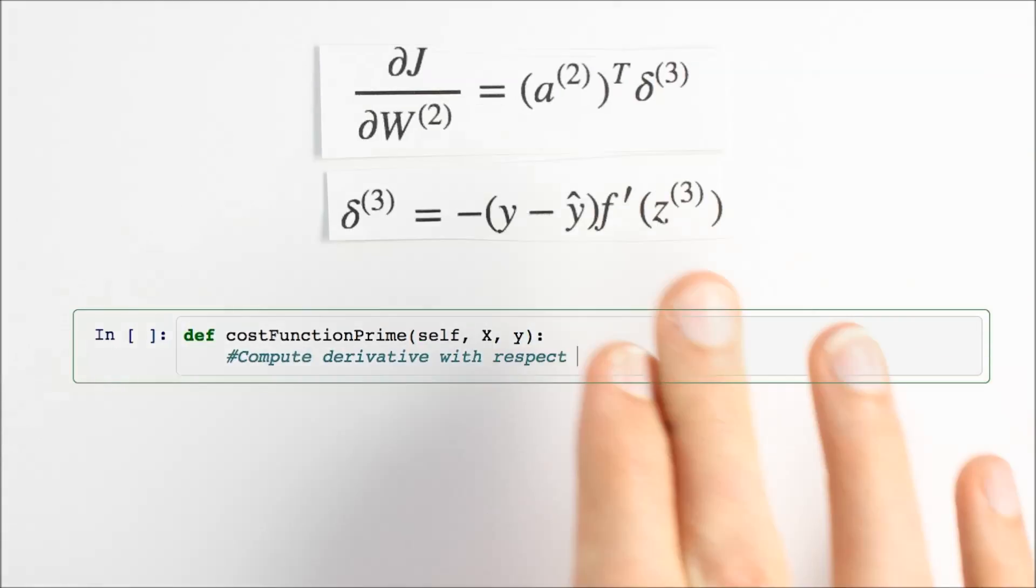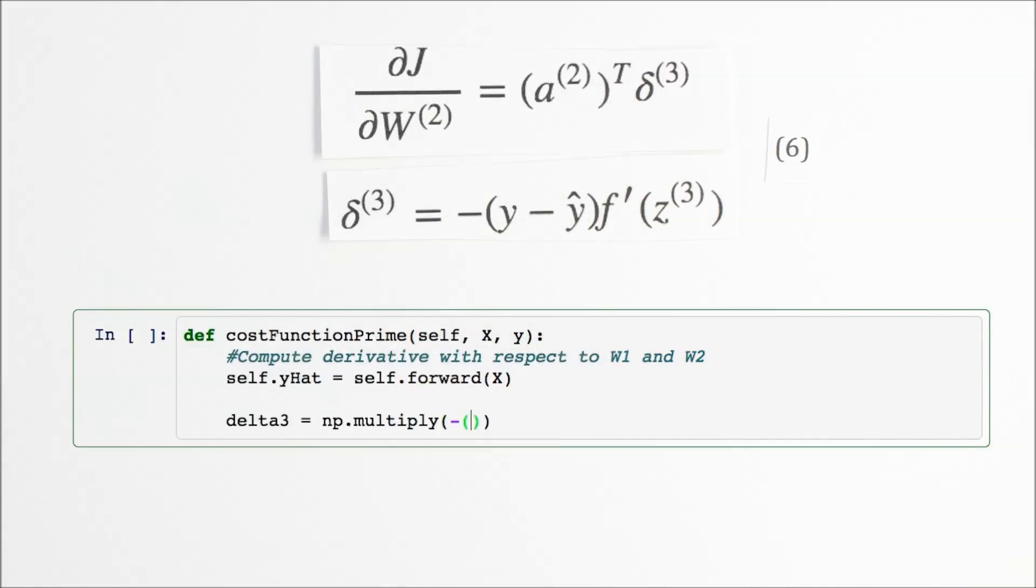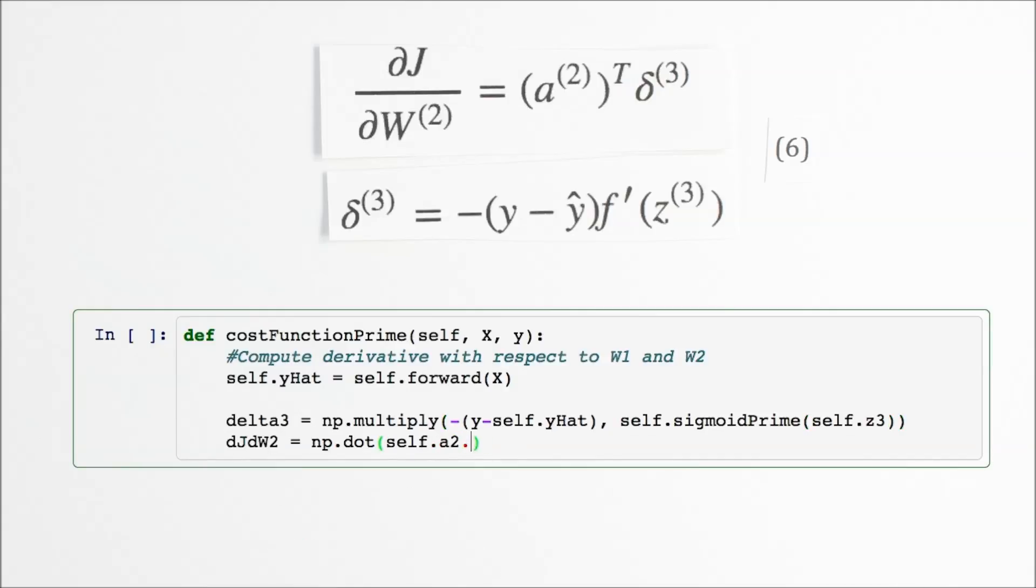We'll code up our gradients in Python in a new method, cost function prime. NumPy's multiply method performs element-wise multiplication, and the dot method performs matrix multiplication.